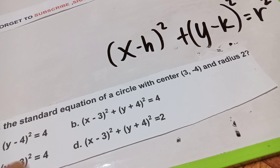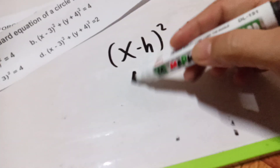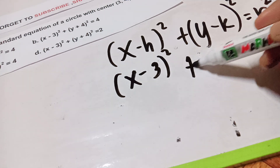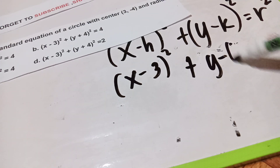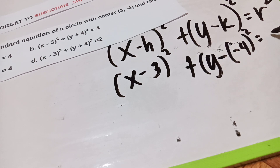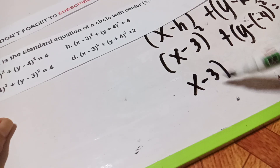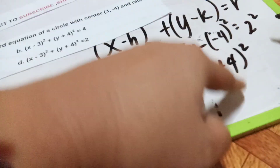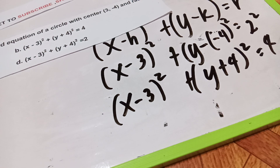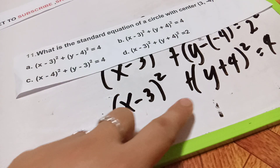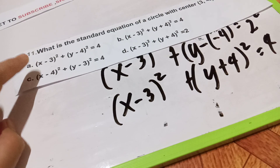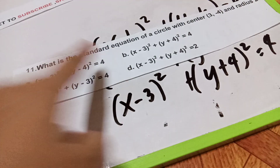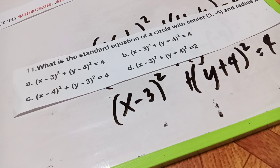So we write: (x minus 3) squared plus (y minus negative 4) squared equals 2 squared. Since negative times negative is positive, y minus negative 4 becomes (y plus 4) squared, and 2 squared becomes 4. So our answer is (x minus 3) squared plus (y plus 4) squared equals 4, which is letter B.